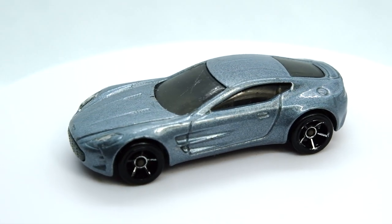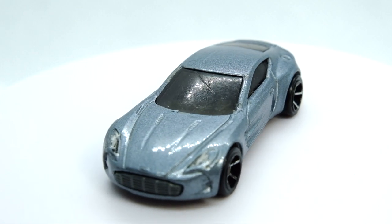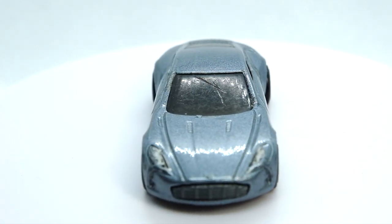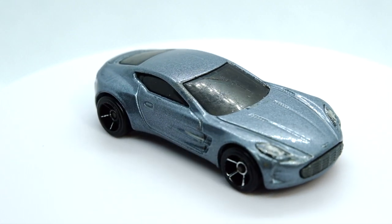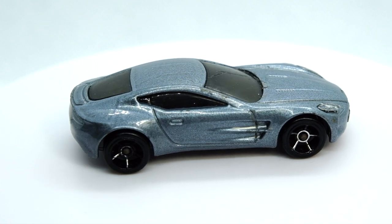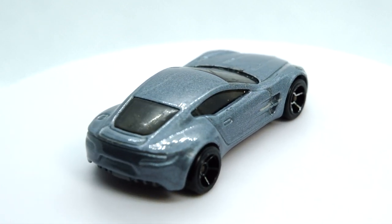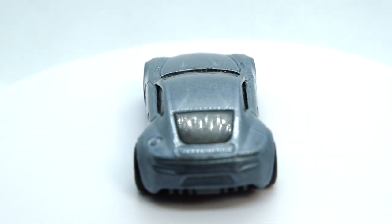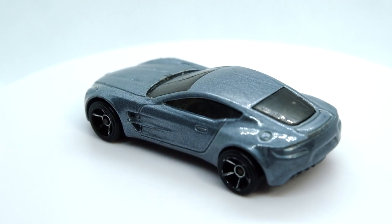So here is how my reasonably play-worn Aston Martin One-77 looked to start off with. It had a deep gouge in the windshield and the tampos had worn away slightly. Those chunky five spoke OH5 wheels had lost their silver color and generally didn't really suit this casting anyway. The back end was pretty anonymous so it was time to make this One-77 a bit more bespoke.